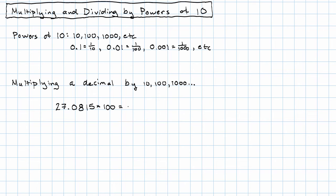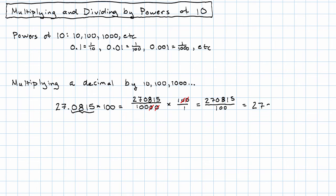Writing this in terms of fractions: 27,0815 over 10,000 — since there are four digits after the decimal point, there are four zeros in the denominator — and I'm multiplying that by one hundred. I can see there's a common factor I can cancel out: one factor of 10, and another factor of 10. I'll get those same digits, 27,0815, but now with two digits after the decimal point.